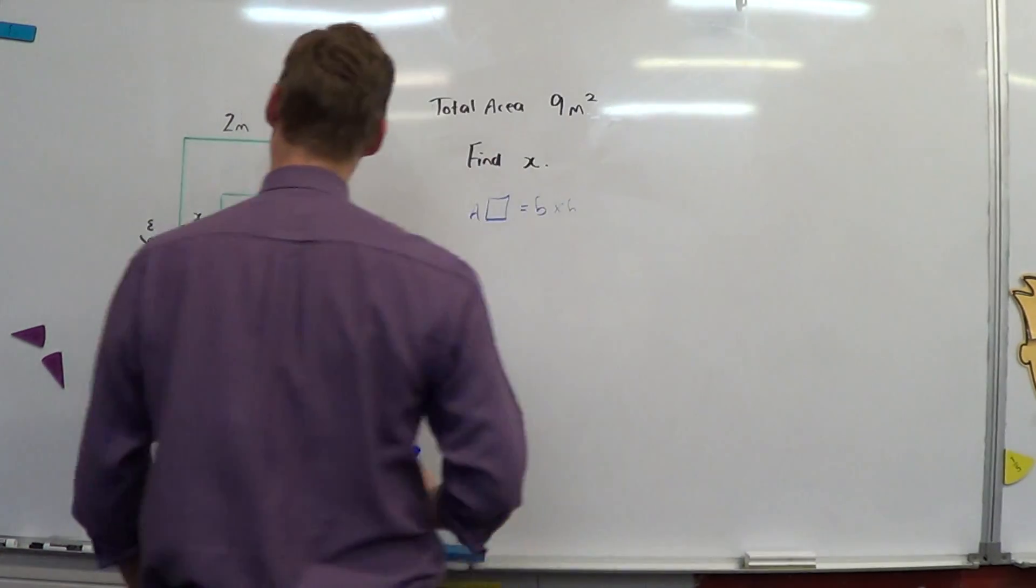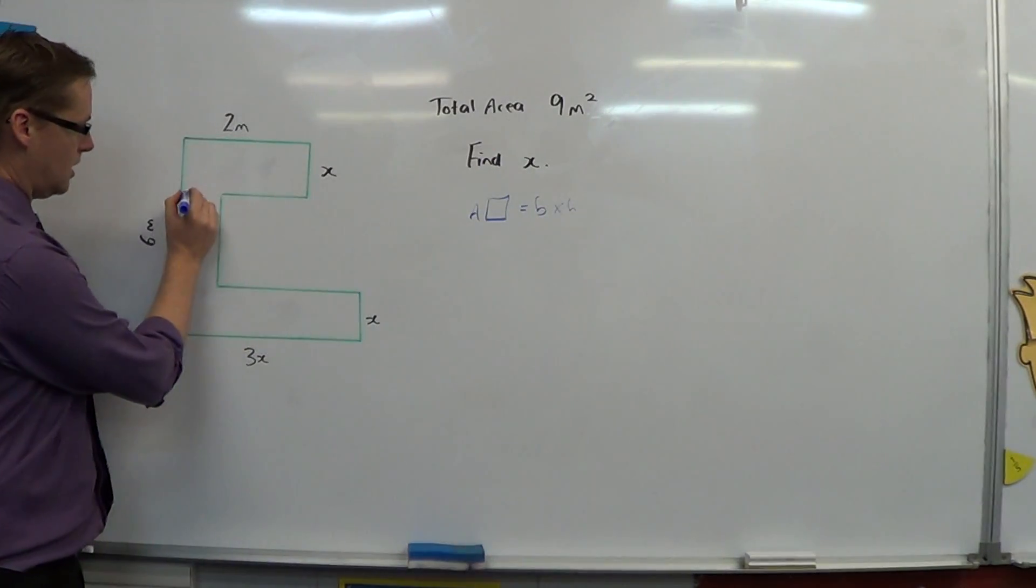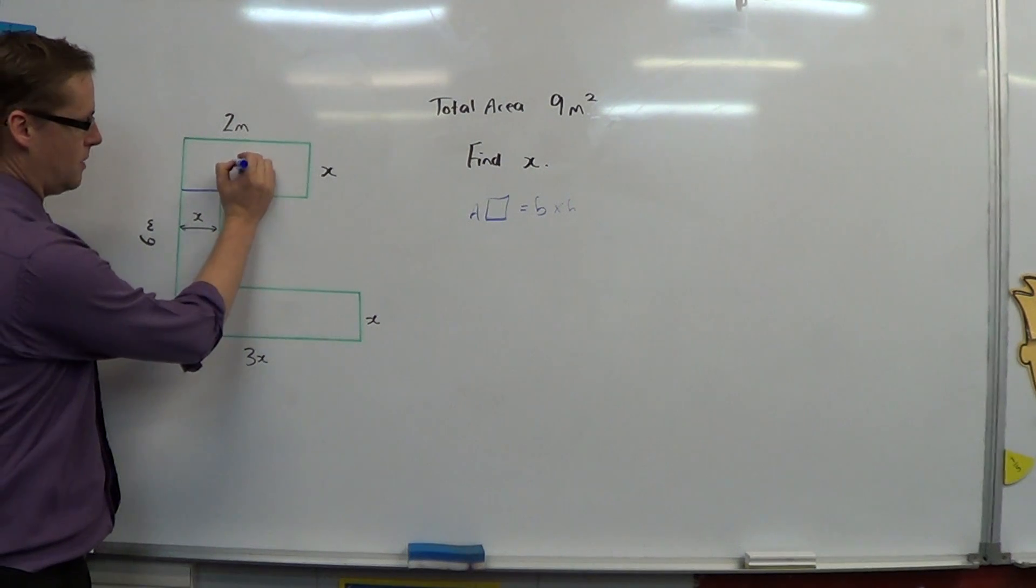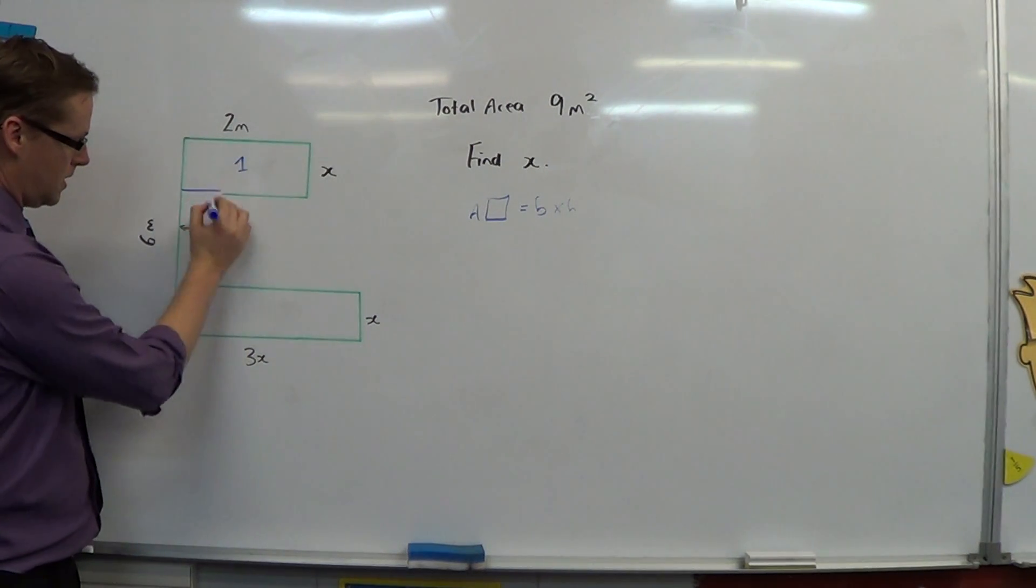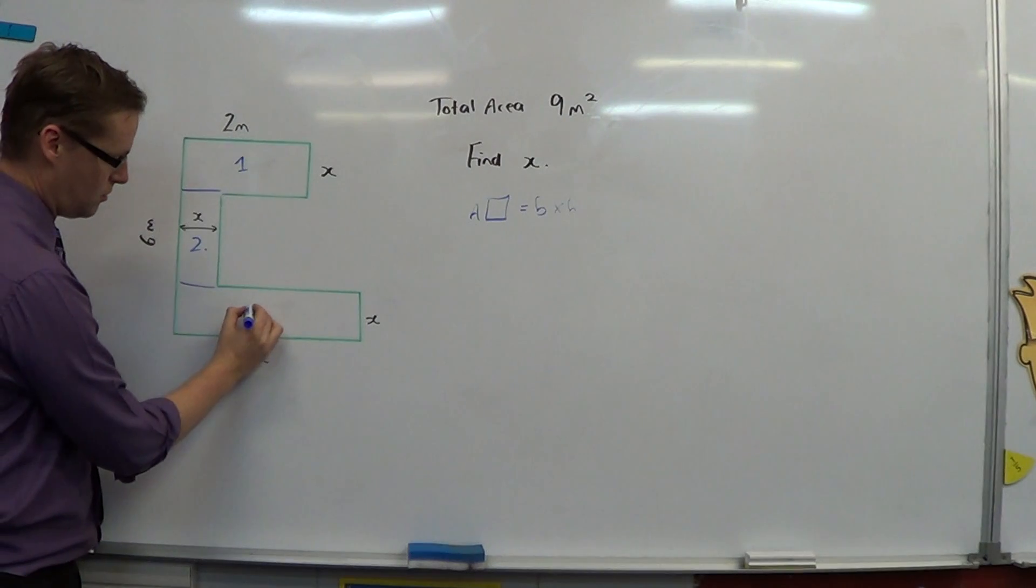And I can roughly see three rectangles here. One up here, one here in the middle, and a third one down here.